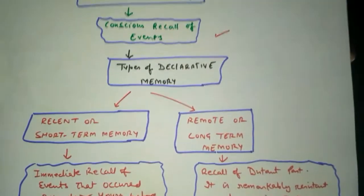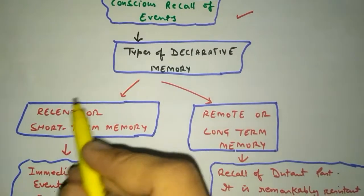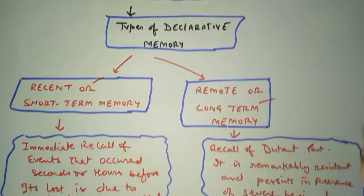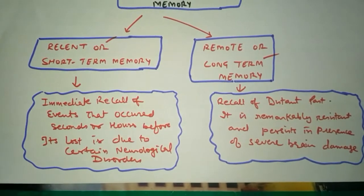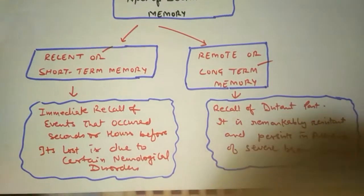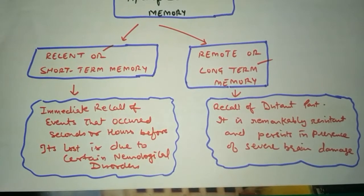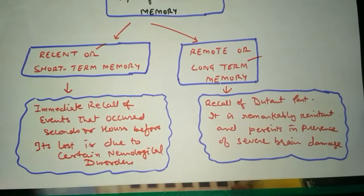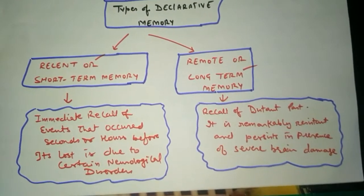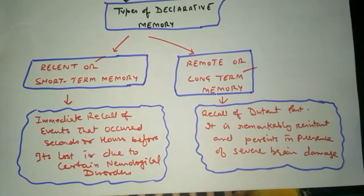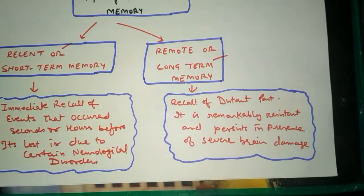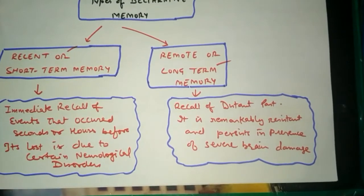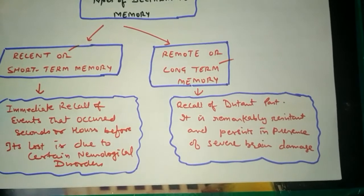Declarative memory, which is the conscious recall of events, can be categorized into two types: recent or short-term memory, and remote or long-term memory. Short-term memory is the immediate recall of events that occurred within seconds, minutes, or hours. The ability to recall remote past events is called long-term memory.